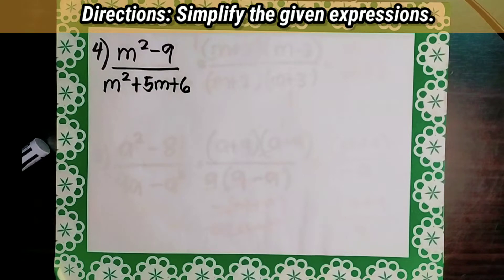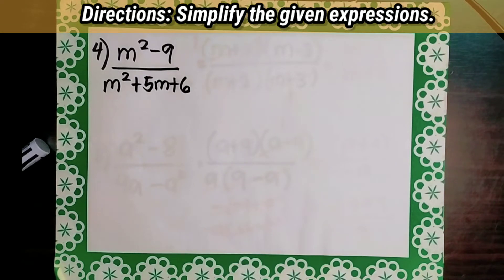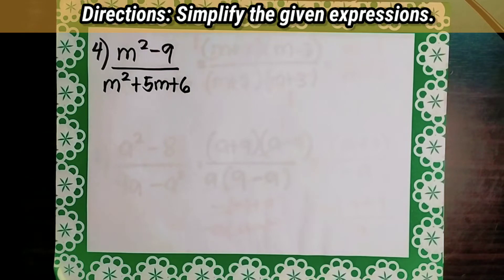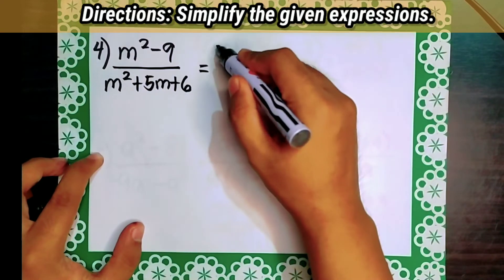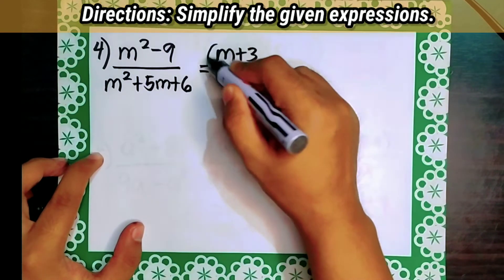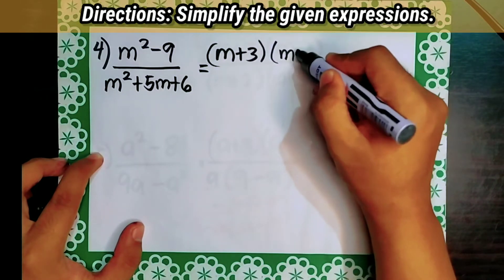Let's have number 4. Let's simplify m squared minus 9 all over m squared plus 5m plus 6. To simplify this, let's factor m squared minus 9 using difference of two squares, and m squared plus 5m plus 6 using general trinomial where a equals 1. The factor of m squared minus 9 is equal to m plus 3 times the quantity m minus 3.